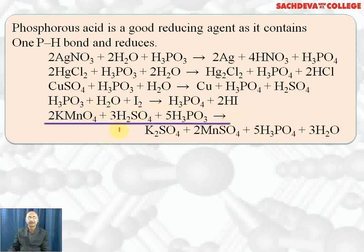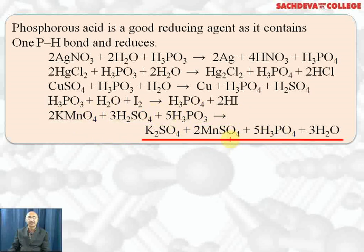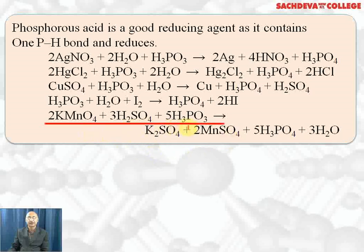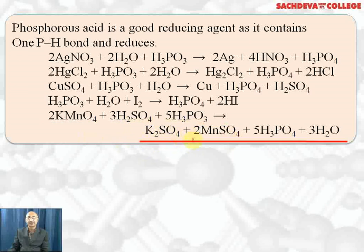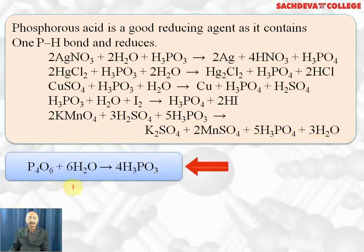KMnO₄ is a good oxidizing agent. It oxidizes H₃PO₃ to H₃PO₄ and gets reduced to MnSO₄. The balanced equation is: 2 KMnO₄ + 3 H₂SO₄ + 5 H₃PO₃ → K₂SO₄ + 2 MnSO₄ + 5 H₃PO₄ + 3 H₂O. Also, P₄O₆ + 6 H₂O gives phosphorous acid H₃PO₃.